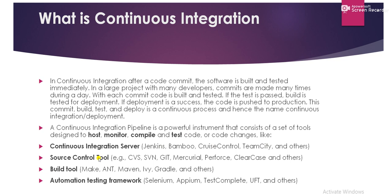For source control, the developer places the code in a versioning control system or repository. Jenkins build jobs pull the code from the repository. There are many version control systems like CVS, SVN, and Git. Most companies use Git because it is a distributed versioning control system. For build tools, options include Ant and Maven. Maven is a very popular build tool in the market. Jenkins, Git, and Maven together are a very popular combination used by most companies.